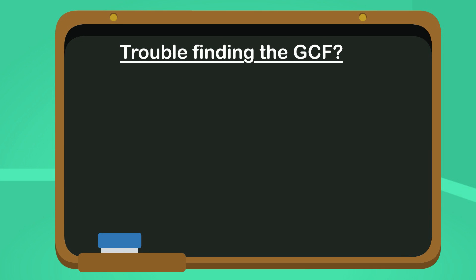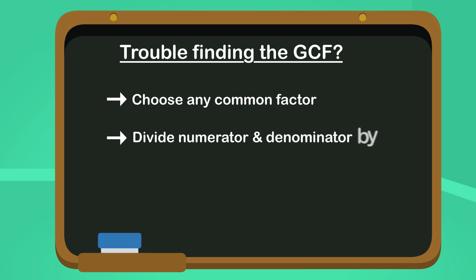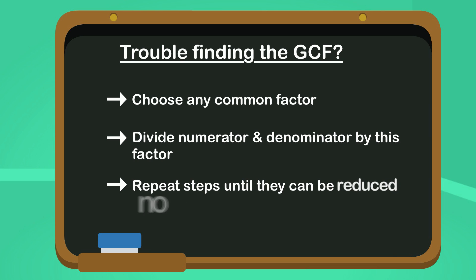If we are having trouble working out the greatest common factor, we can choose any common factor. Divide both the numerator and the denominator by this factor, and then repeat the steps until they can be reduced no further.